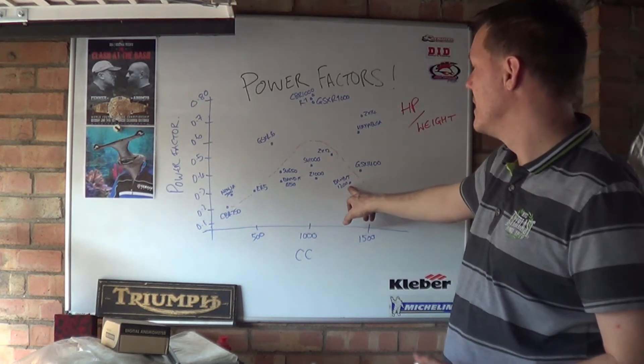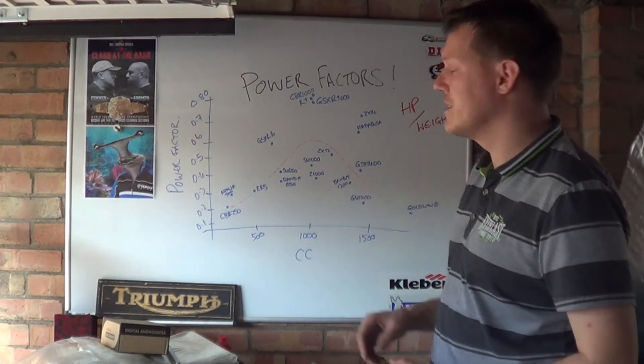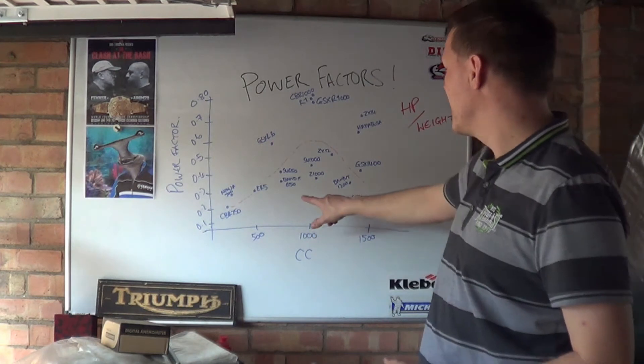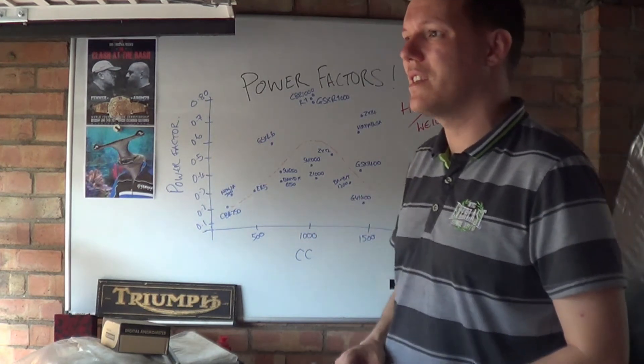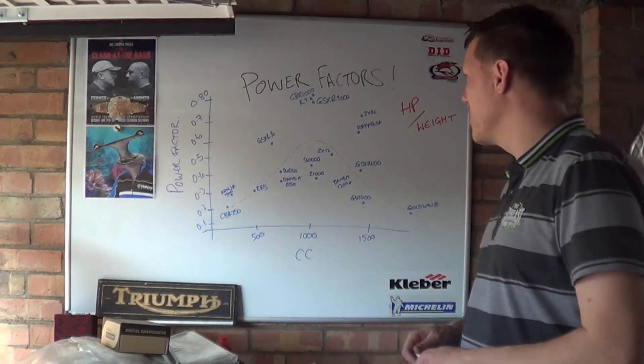But what's quite interesting is you've got a bandit 650 here and then you've got a bandit 1200 here. And although the CC has increased, the power factor really hasn't increased that much. I think there's a slight difference, like 0.02 of a power factor. It's literally bugger all.